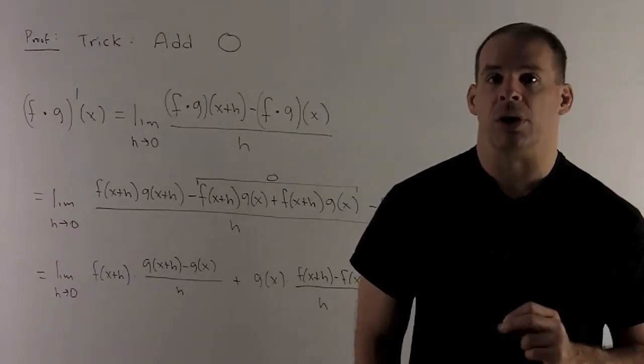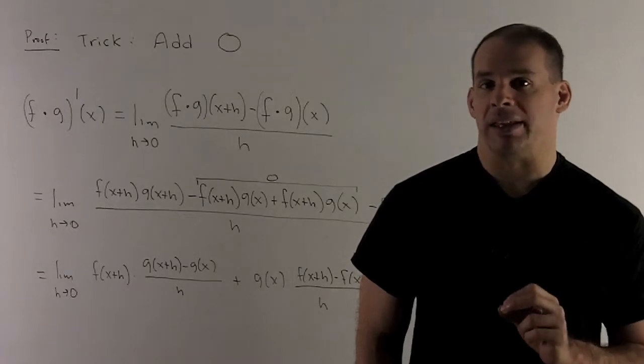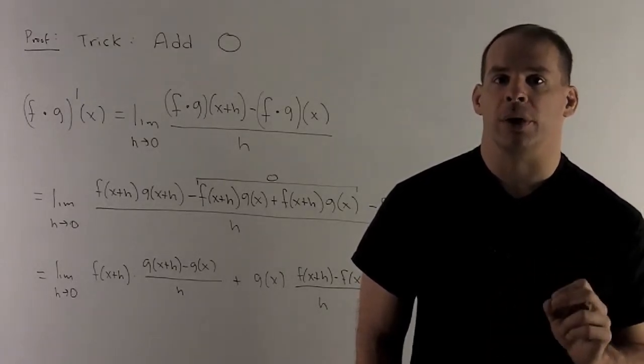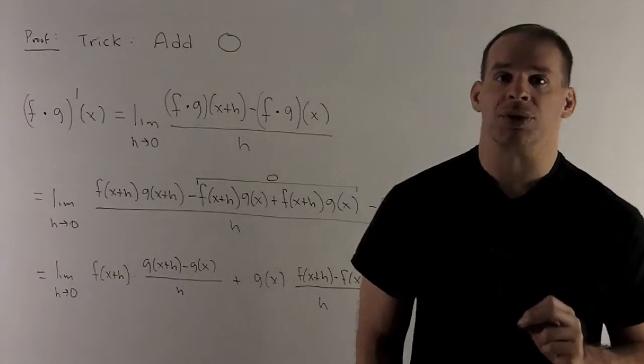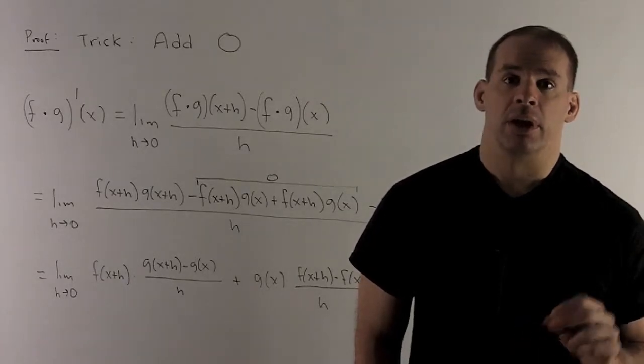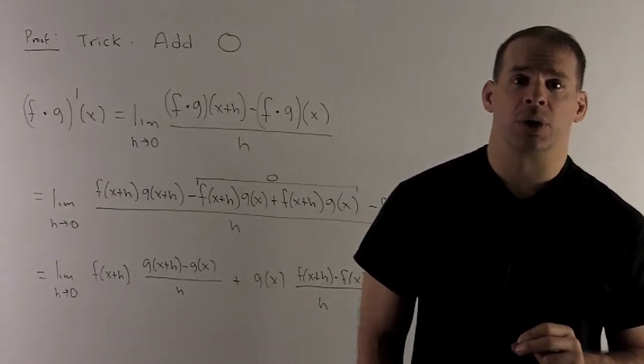How do I get the product rule? Our main trick is going to be adding zero. Adding zero to anything leaves it unchanged, so what we're going to do is add zero in a clever way, and that's going to get us to our answer.